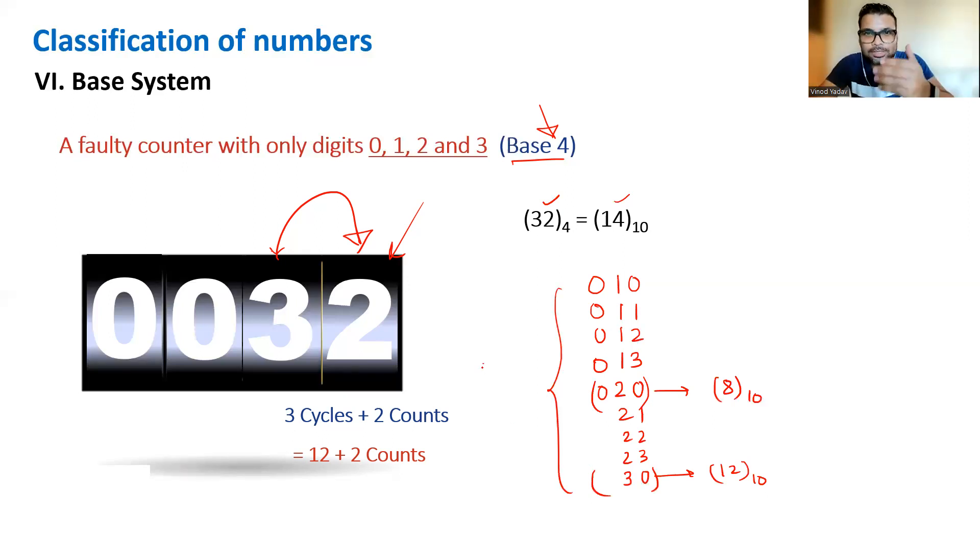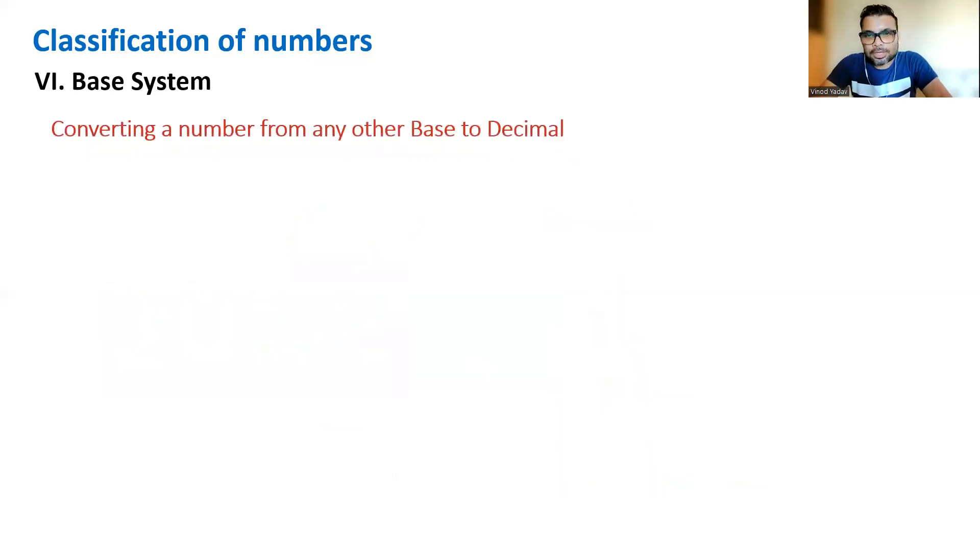Let's now see two more concepts: converting from one base to another base. First, let's understand a number 763, for example, in our base, base ten.